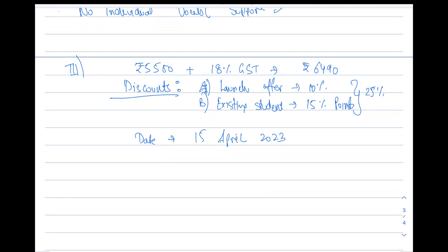Regarding the duration — how much time will it take to complete the course — approximately it will take two months. You might be thinking: if the notification comes before that, what happens? In that situation we will have to skip some topics and cover only the important ones. Hopefully that situation will not arise and we will get the full time to complete the course.